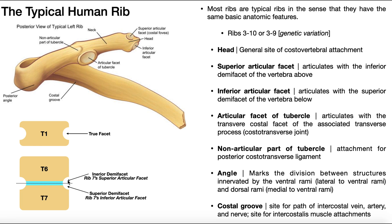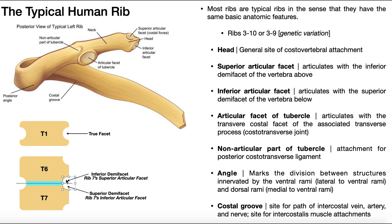The upper one is termed the inferior demi-facet — it's inferior because it's inferior in terms of T6. There would also be one up here shared with T5. The one down here is the superior demi-facet of T7, which would also have another demi-facet below shared with T8. So we name demi-facets according to the vertebra: this would be T6's inferior demi-facet, and the inferior demi-facet of the vertebra above combined with the superior demi-facet of the vertebra below makes up the entire attachment for that rib.